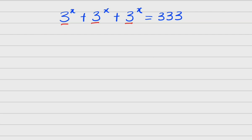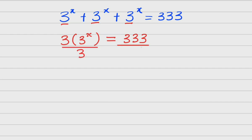Now if you check, this is the same as this, and the same as this. So we can actually add them. Adding them gives three of it, which is three times a^(3x), and this equals 333. So I'll divide both sides by three. This three cancels that three, so I have 3^x equals 111.